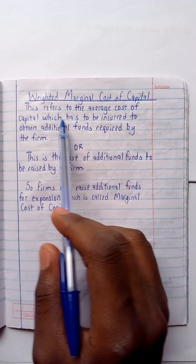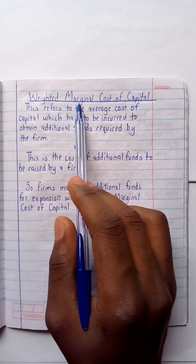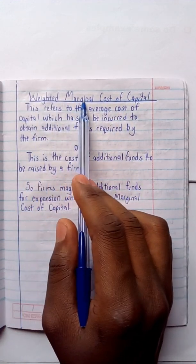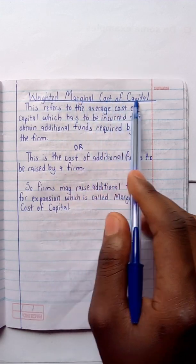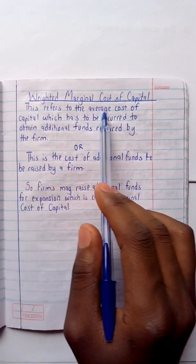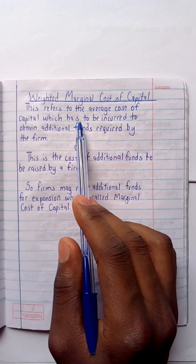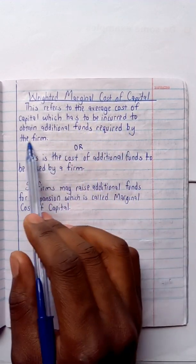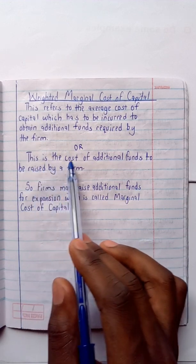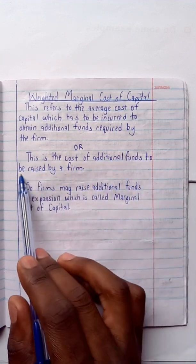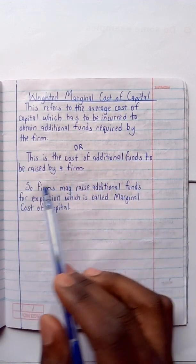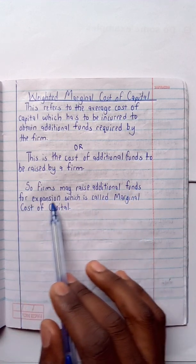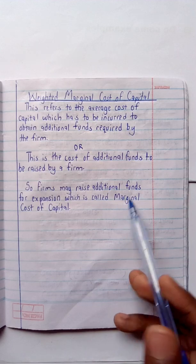For today I'm going to begin with the Weighted Marginal Cost of Capital. What is the meaning of the Weighted Marginal Cost of Capital? This refers to the average cost of capital which has to be incurred to obtain additional funds required by the firm, or this is the cost of additional funds to be raised by a firm. Firms may raise additional funds for expansion — this is what they call the cost of capital.